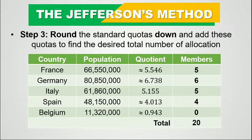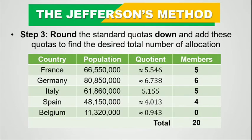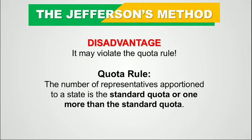However, observe that Belgium receives zero committee members. We have not allocated at least one committee member to Belgium. This is one of the disadvantages of the Jefferson's method because it may violate the quota rule. The quota rule states that the number of representatives apportioned to a state should be the standard quota or one more than the standard quota. In this case, Belgium receives nothing, which seems unfair. That is the Jefferson's method of apportionment.